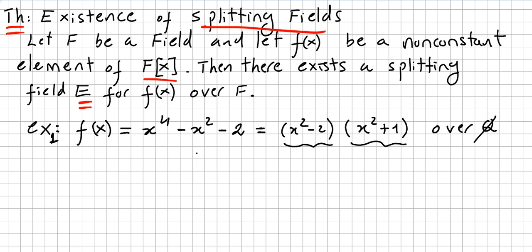So the zeros of f(x) are going to be plus and minus square root of 2, and the other ones are plus and minus i.